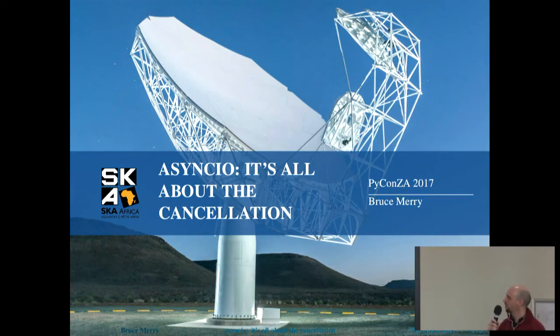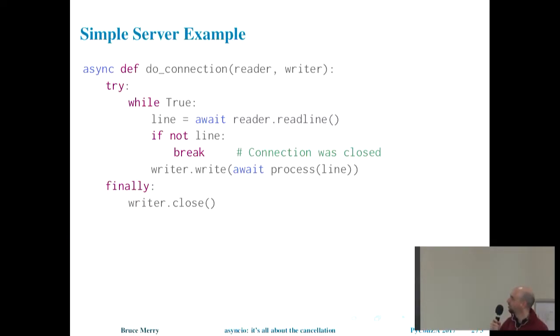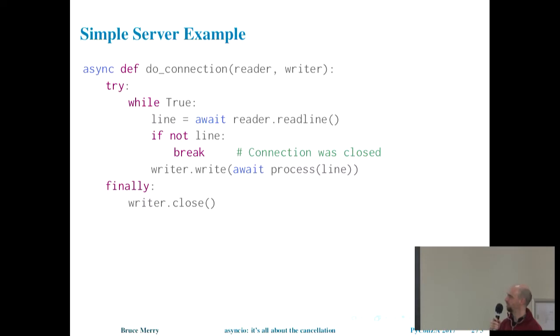Hello. So I'm going to be talking about asynchronous IO, particularly about cancellation. What is cancellation? Well, cancellation is what's going to happen in five minutes to my talk. If you've not seen AsyncIO before, this is a very simple example of how you might write a server. You've got some task that handles each connection as a reader and a writer. This is Python 3.5 syntax. You do an asynchronous call to read some data. If the client's disconnected, you break out. Otherwise, you asynchronously process whatever they've asked you to do and send them a response back.